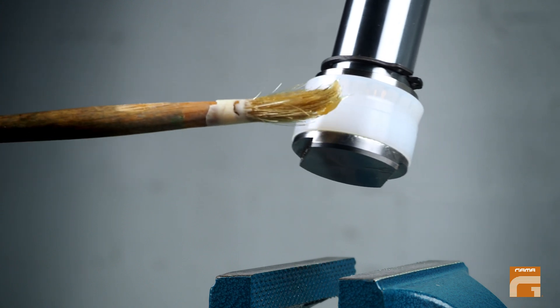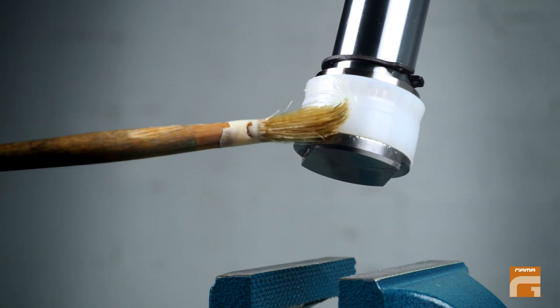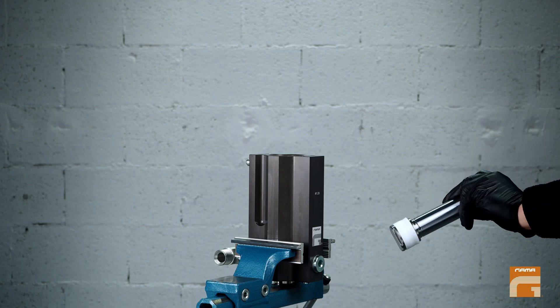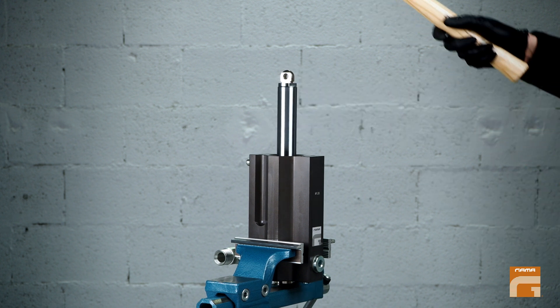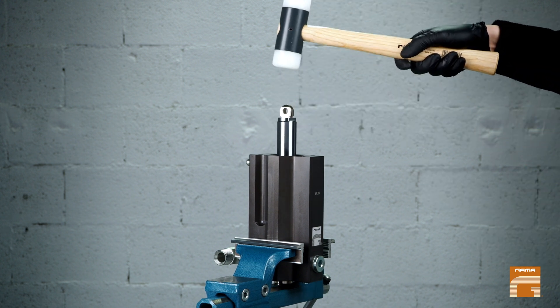Apply some grease on the seals. Fix the pump body in the vise and insert the piston using a plastic mallet.